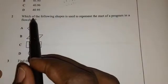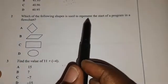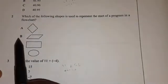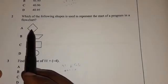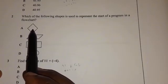Number two says, which of the following shapes is used to represent the start of a program in a flowchart? So A, we have a diamond. A diamond is called a decision box and is not used at the start of the flowchart.